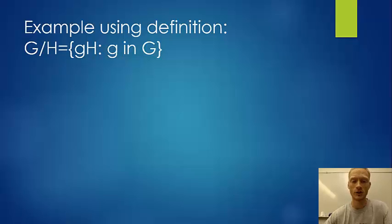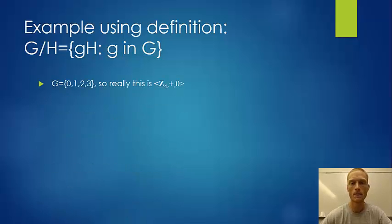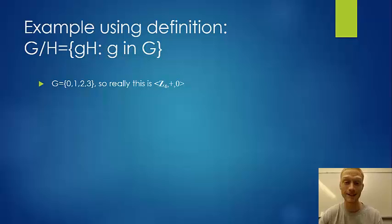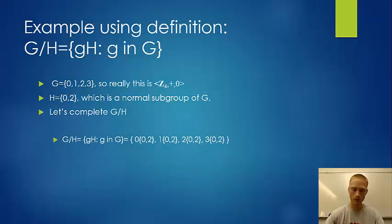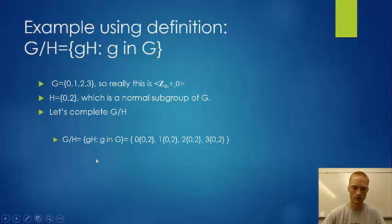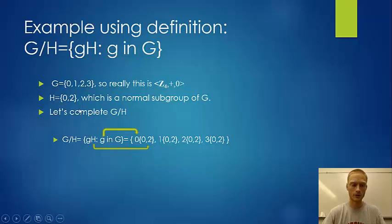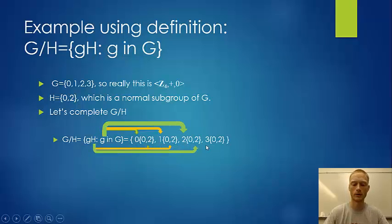Let's look at an example. Our group G is integers mod 4 under addition, so G = {0, 1, 2, 3} with identity 0. A normal subgroup H is {0, 2}. To compute G/H, we take gH for each g in G — so for g = 0, 1, 2, and 3.